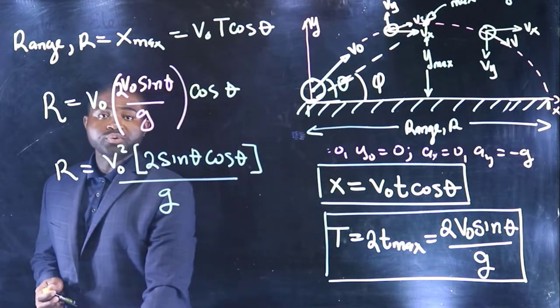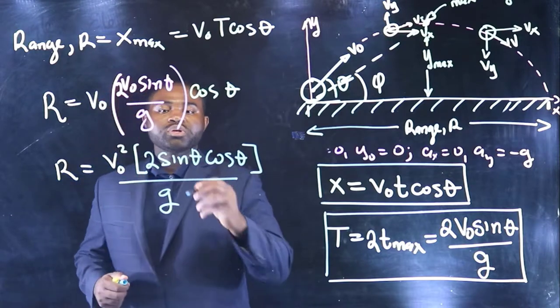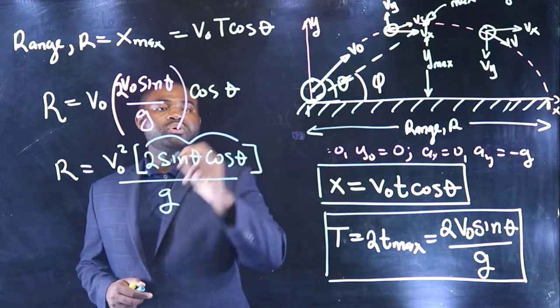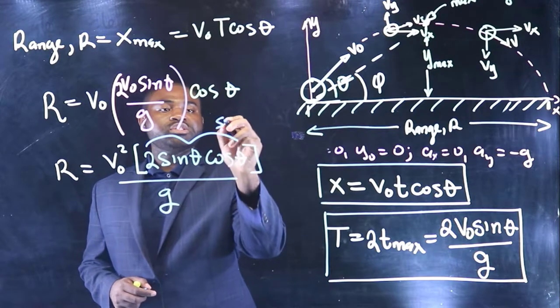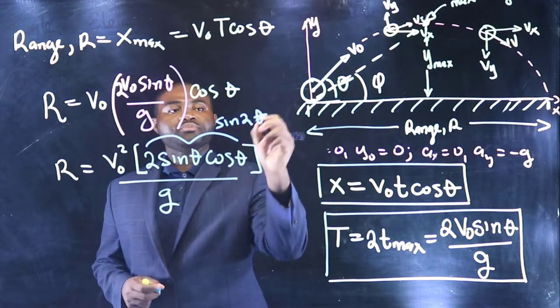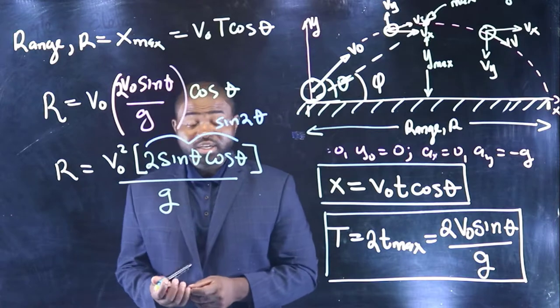But what do we know? We know that 2 sine theta cosine theta is just sine 2 theta. This is a trigonometric identity.